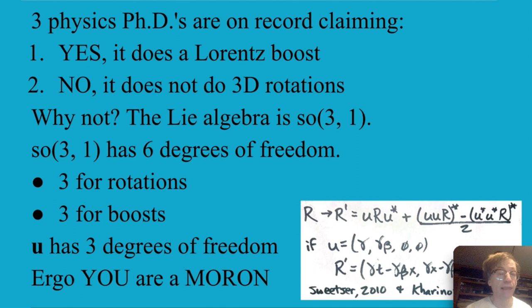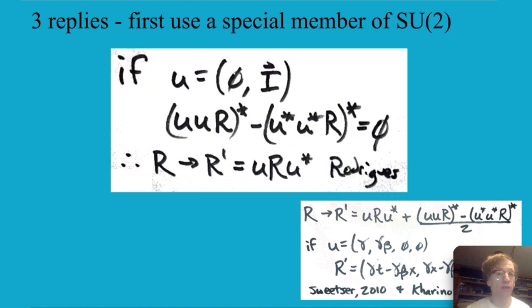Well let me give you at least three reasons why they might not be correct and the simplest one for me is a little bit of algebra. We are going to use a special member of SU(2) and that is where the scalar is equal to zero and so we have this three vector that has a norm of one. And if you do that then you can see that the second and third terms of that generalization of Rodriguez go away they cancel.